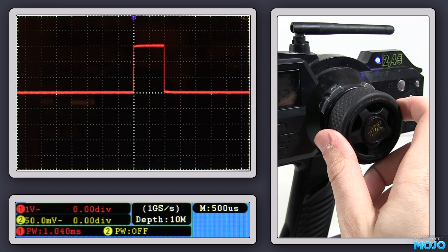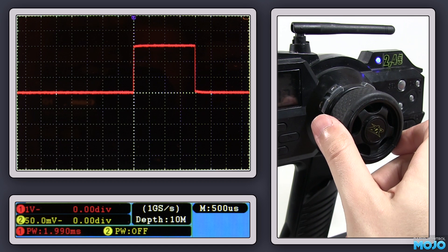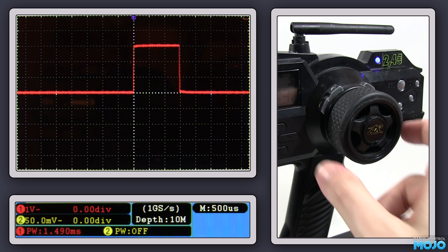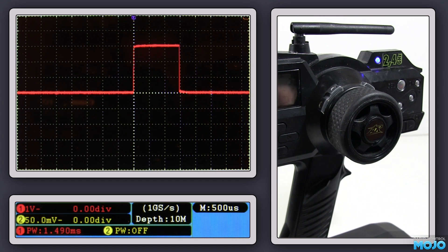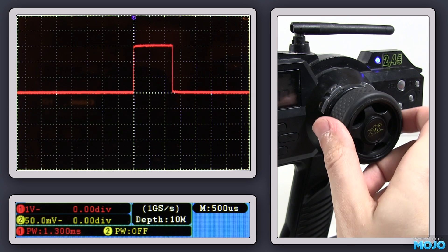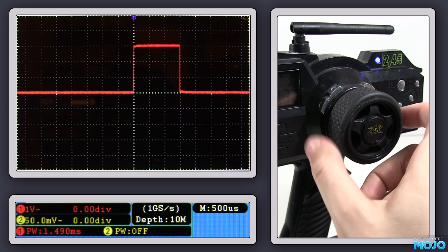If we sweep the steering, you can clearly see the pulse width getting longer and shorter. Center is 1.49 milliseconds. Left is 0.99 milliseconds. And right is 1.99 milliseconds.